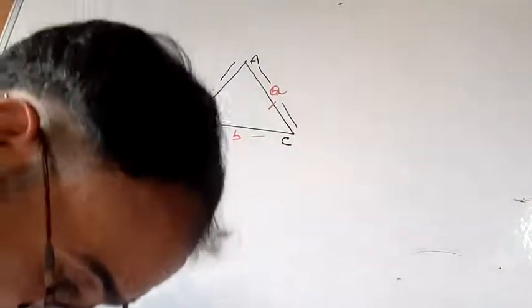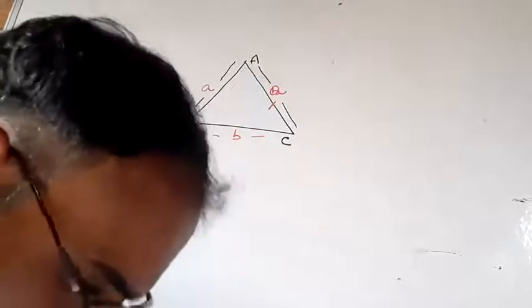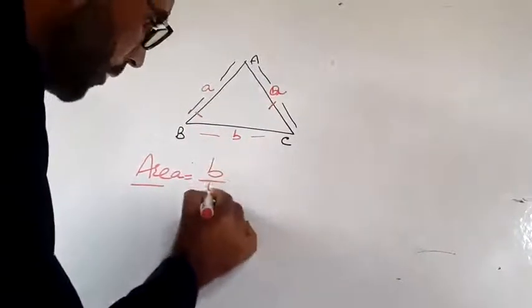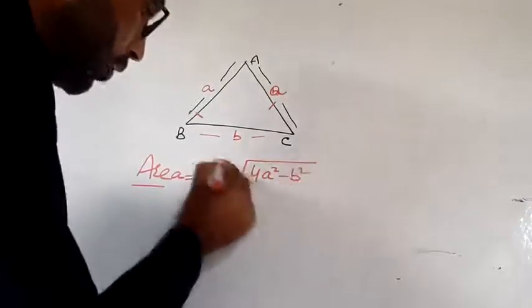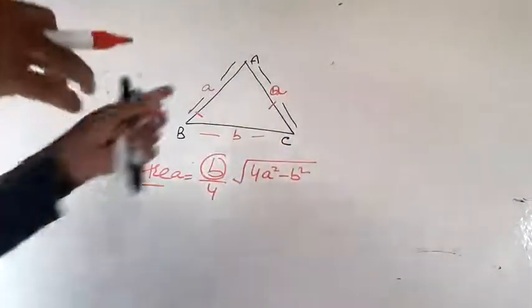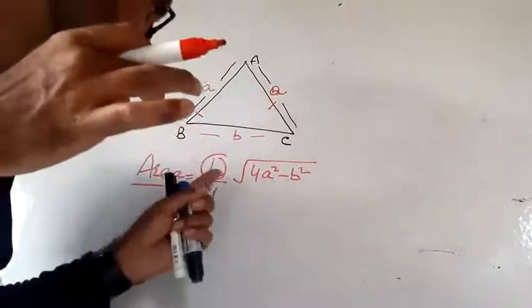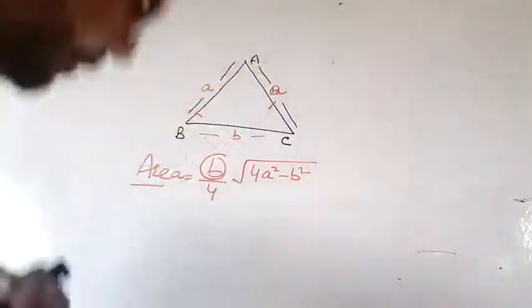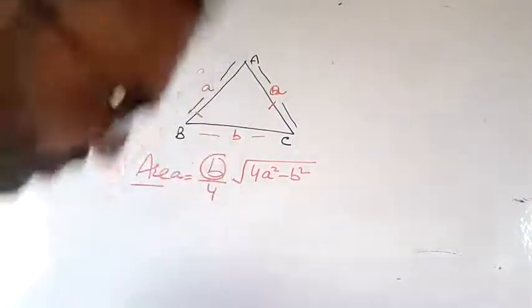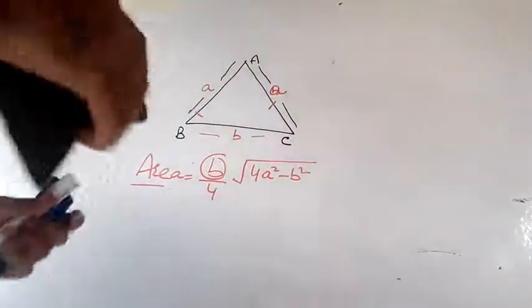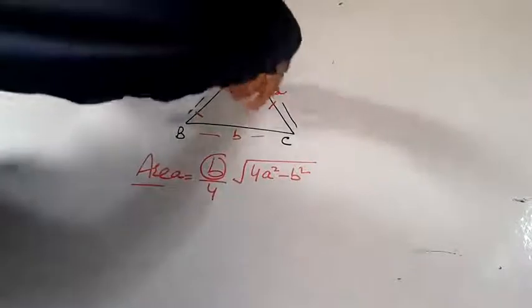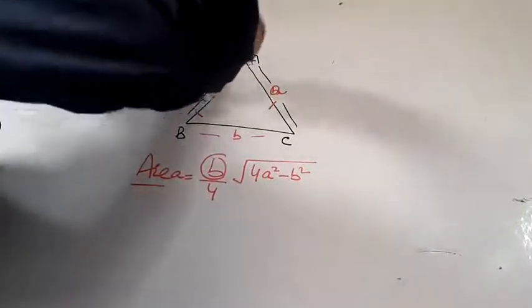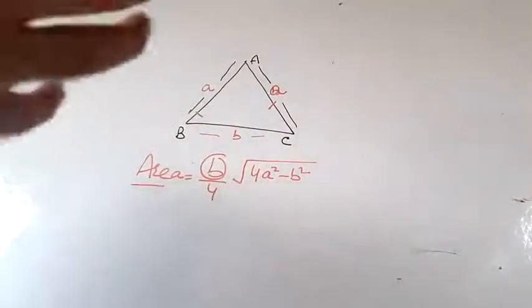The area of an isosceles triangle is determined using the formula: b upon 4 times square root of 4a squared minus b squared, where a is the equal side and b is the different side. The perimeter is simply a plus b plus c or AB plus BC plus AC.